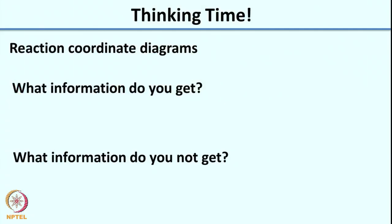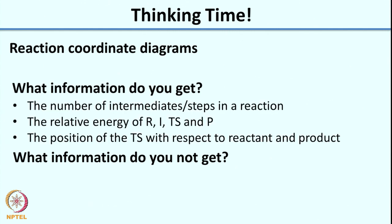So now with this concept, I had asked you to think about this question: looking at reaction coordinate diagrams, what information do you get and what information do you not get? Some of the information you get, unlike just showing the reaction with an A going to B arrow, is that you can see the number of intermediates or steps involved. The reaction coordinate diagram also gives you the relative energy of the reactant, the intermediates, the transition states, and the product. It also tells you the position of the transition state with respect to the reactant, product, and intermediate.